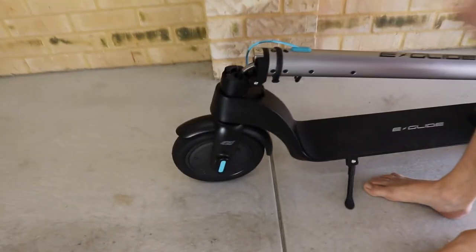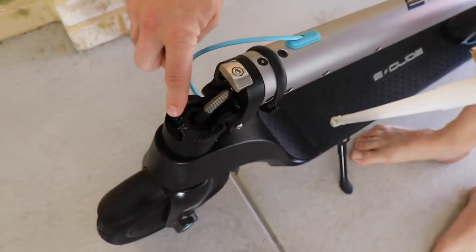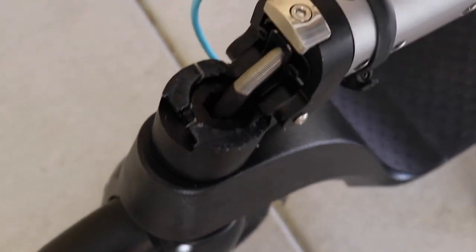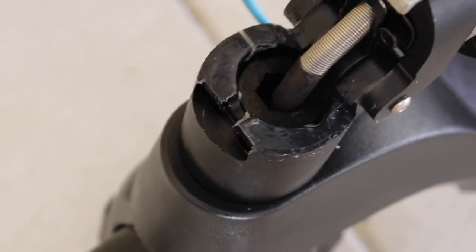The method I've chosen to use is to get some all-purpose silicon like this and to smear a very thin layer all around the edges of where the handle joins onto the body of the scooter.